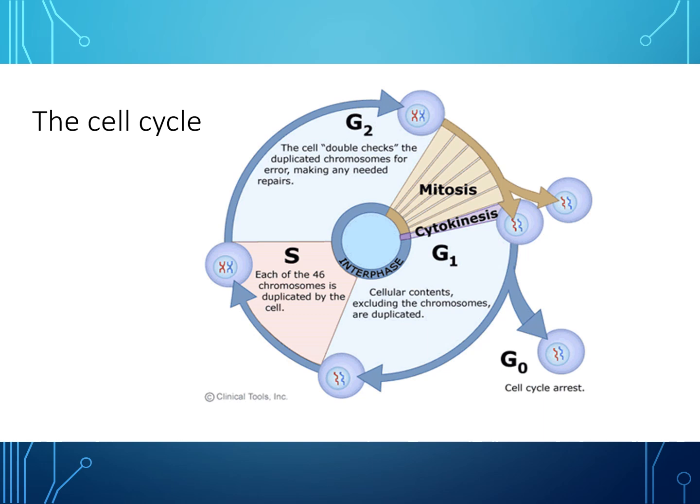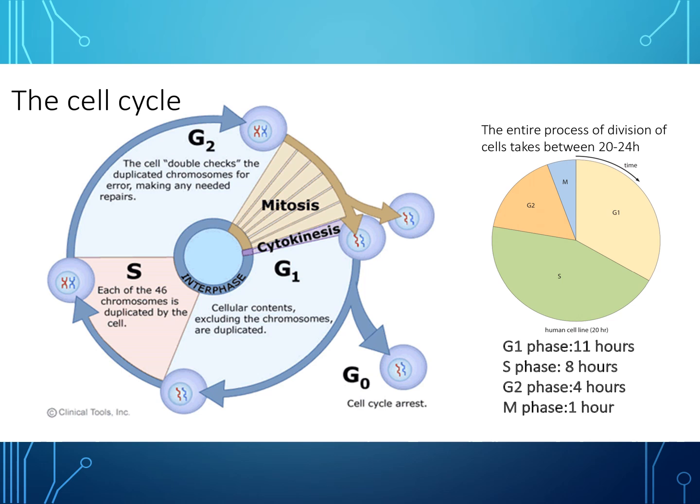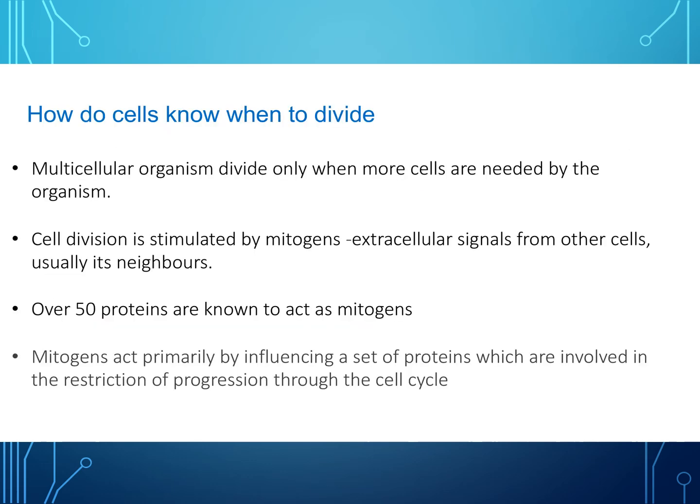The entire process of cell division takes between 20 and 24 hours. The G1 phase takes about 11 hours, the S phase 8 hours, the G2 phase 4 hours, and the M phase 1 hour.